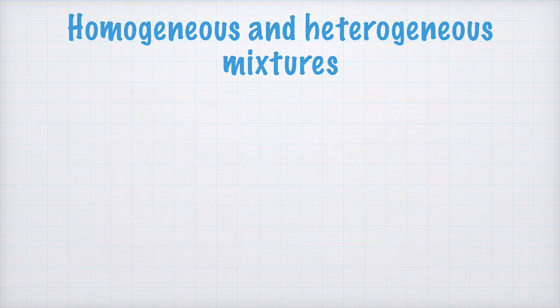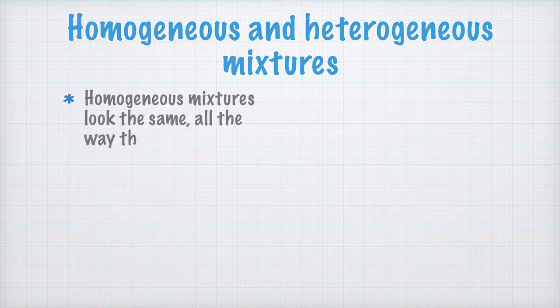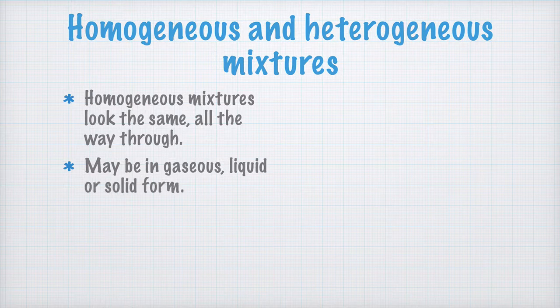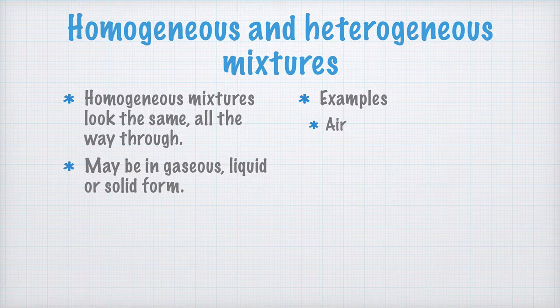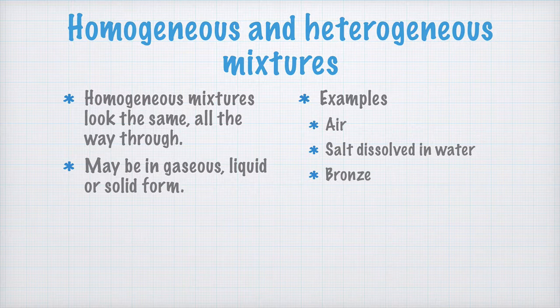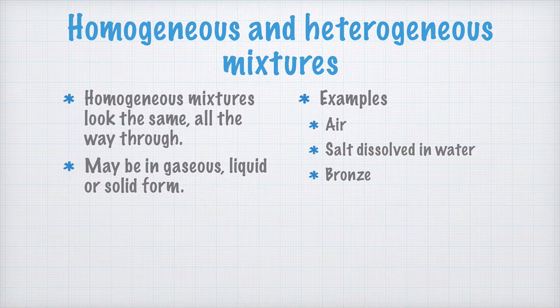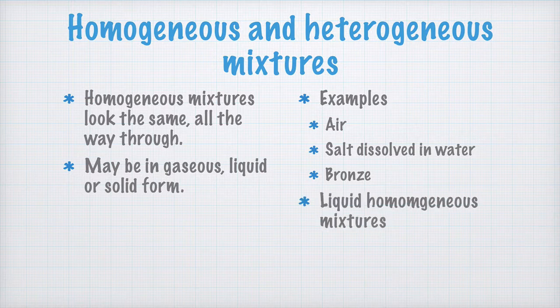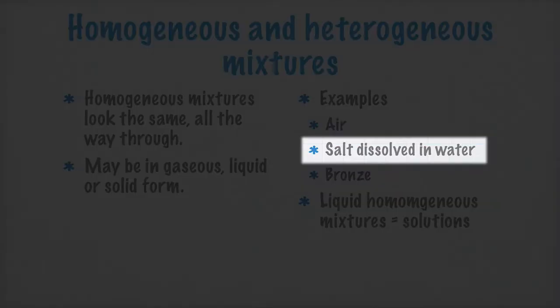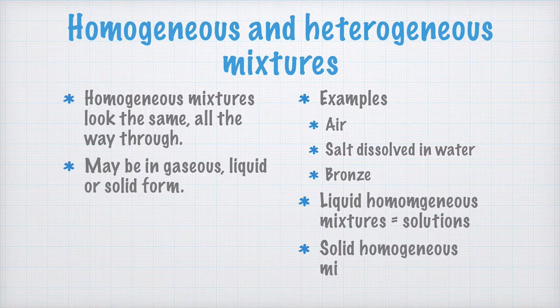So let's write something about that too. Homogeneous mixtures. They look the same all the way through. Homogeneous mixtures may be both gases, liquid and solid. Normal, pure air is an example of a homogeneous gas mixture. Salt dissolved in water is a liquid homogeneous mixture. And bronze, which is an alloy between copper and tin, is an example of a solid homogeneous mixture, or a solid solution as you can also call it. Liquid homogeneous mixtures, that's what we normally call solutions. This mixture of salt and water is thus normally called a salt solution. Solid homogeneous mixtures are called alloys, exactly as I said about bronze over here.